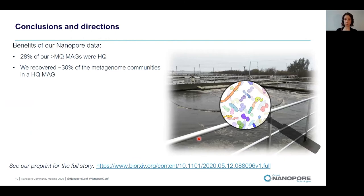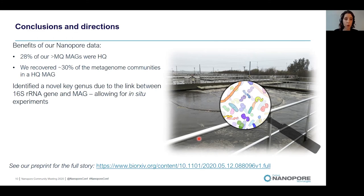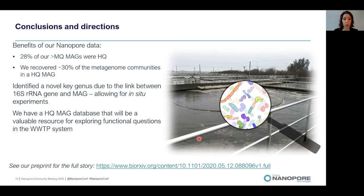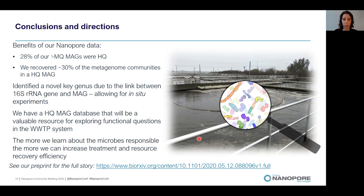The benefits of our nanopore data meant that about 28% of our medium-quality MAGs were actually high quality, and we recovered around 30% of metagenome community members in a high-quality MAG — not possible with short-read sequencing alone. We also identified a novel key genus by linking the 16S gene to the MAG, enabling in situ visualization and experiments. The high-quality MAG database will be a valuable resource for exploring functional questions in wastewater treatment, and the more we learn about the responsible microbes, the more we can increase treatment and resource recovery efficiency.